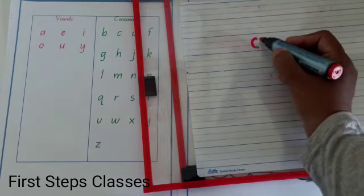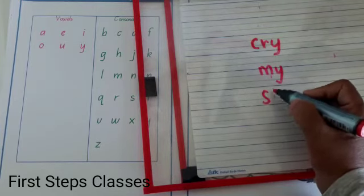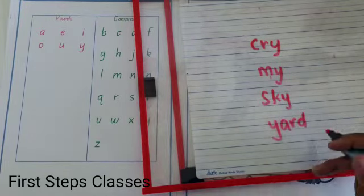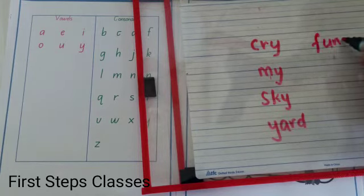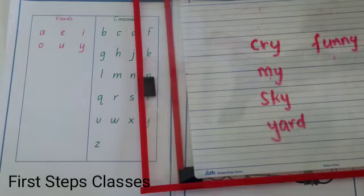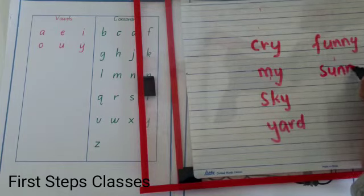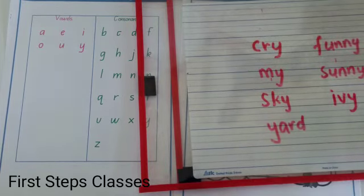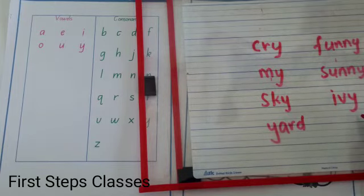In words like cry, my, sky, and yard, Y makes a Y sound. And in words like funny, Y is making an E sound — so here it acts as a vowel. Sunny — again it is acting like a vowel. Ivy — again here it acts like a vowel. So words in which Y acts like a consonant and words in which Y acts like a vowel make it a semi-vowel.